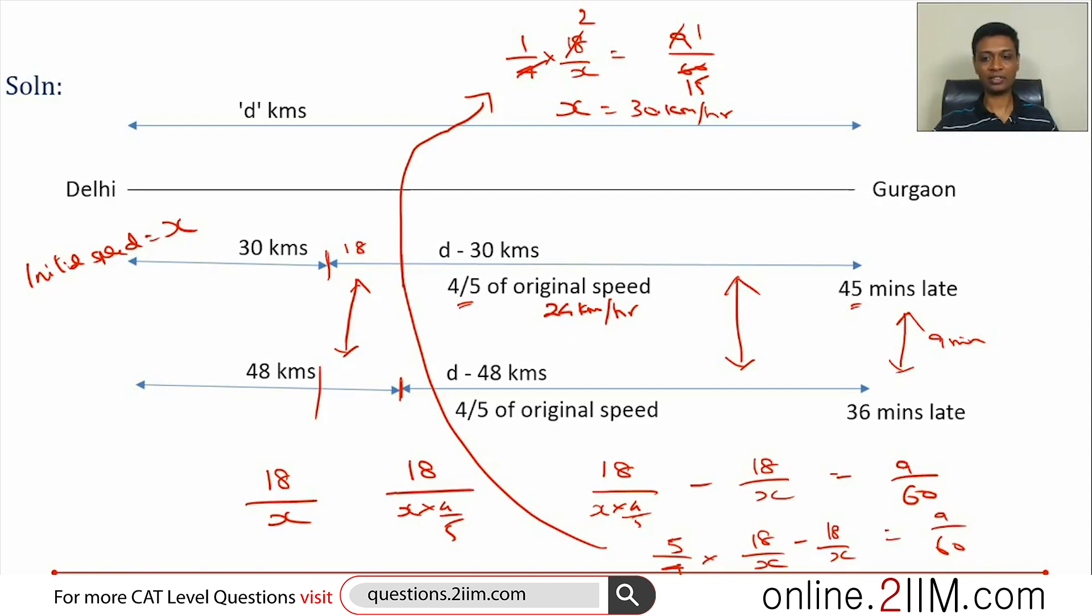d minus 30 traveled at 24 kilometers per hour. d minus 30 traveled at 30 kilometers per hour. The difference is 45 minutes. I am going to call d minus 30 as some k. So I am going to write that equation here. k by 30, then k by 24. The difference between these two is 3 by 4. I'll frame this equation: k by 24 minus k by 30 is 3 by 4.